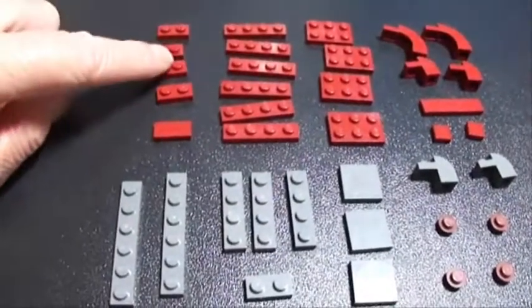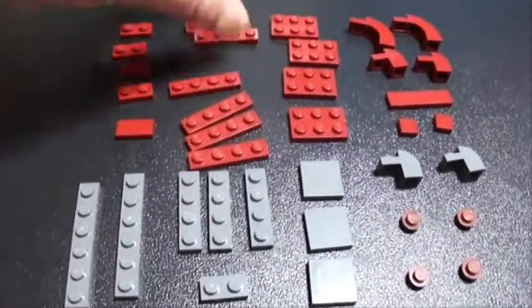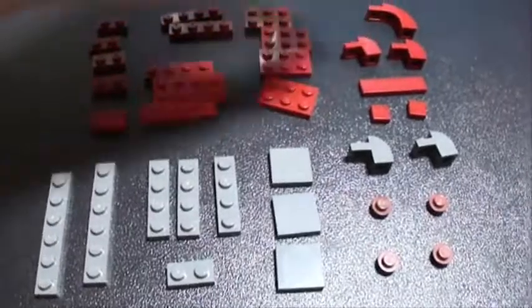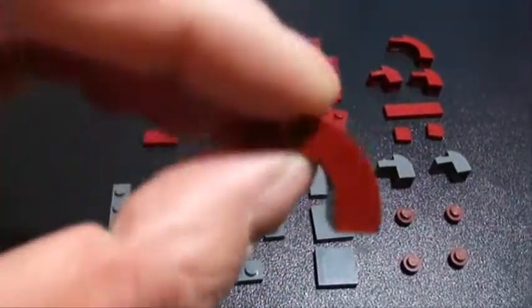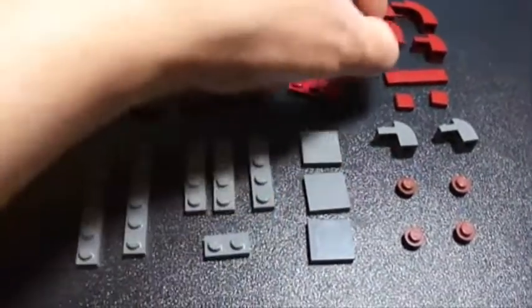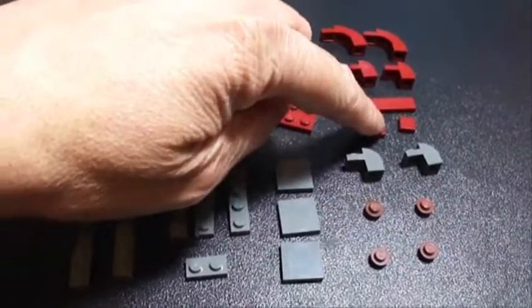You need four 1x2 plates, one 1x2 tile, six 1x4 plates, four 2x3s, two of these large bows, two of these smaller bows, a 1x4 tile, and two 1x1 tiles.